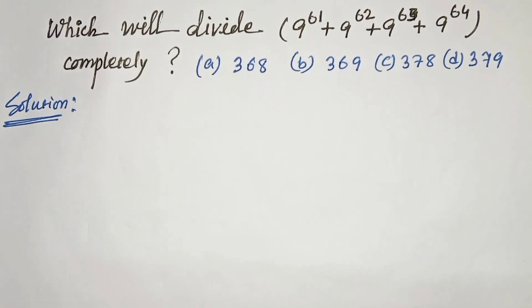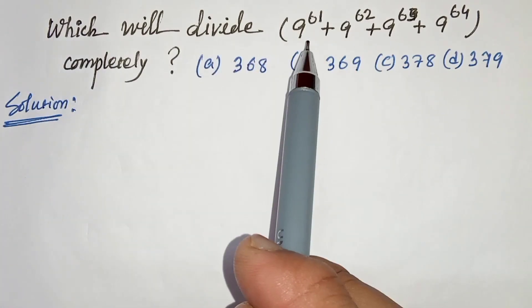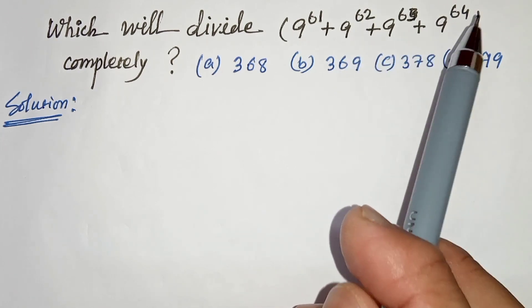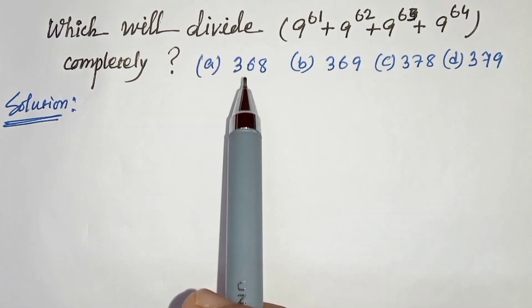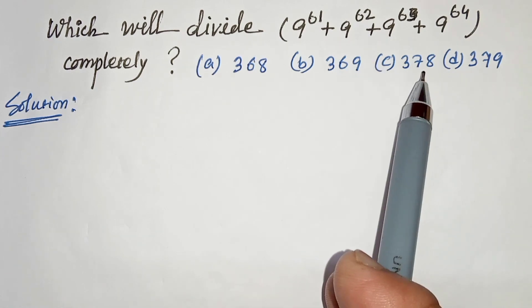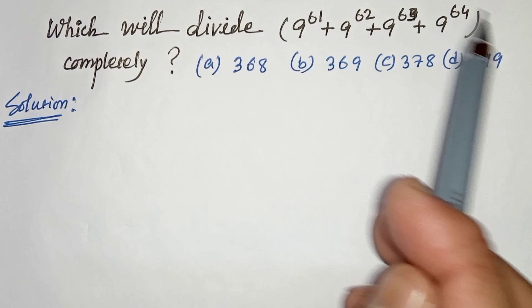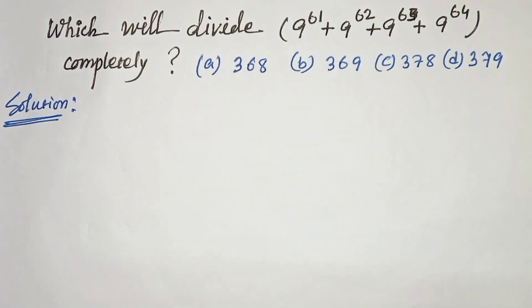Hello everyone, in this video we have: which will divide 9 to the power 61 plus 9 to the power 62 plus 9 to the power 63 plus 9 to the power 64 completely? Options are 368, 369, 378, 379. So we have to find which will divide these completely. Let's start.